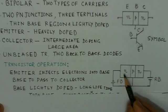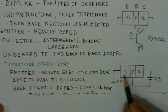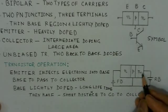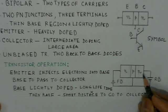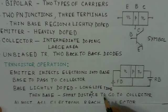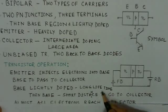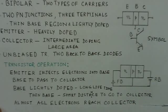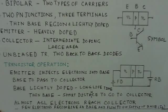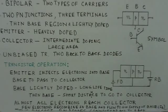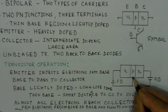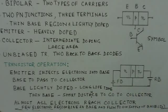In the emitter, the electrons are the majority carriers. They get injected into the base region, and base is to pass these electrons to the collector for efficient transistor operation, so that there is a long lifetime of the carriers. Most of them reach the collector. It has a thin base, so these carriers have to travel a very short distance to reach the collector. Almost all electrons reach the collector. Only few electrons recombine in the base and flow to the positive terminal of the supply, and they give rise to the base current.